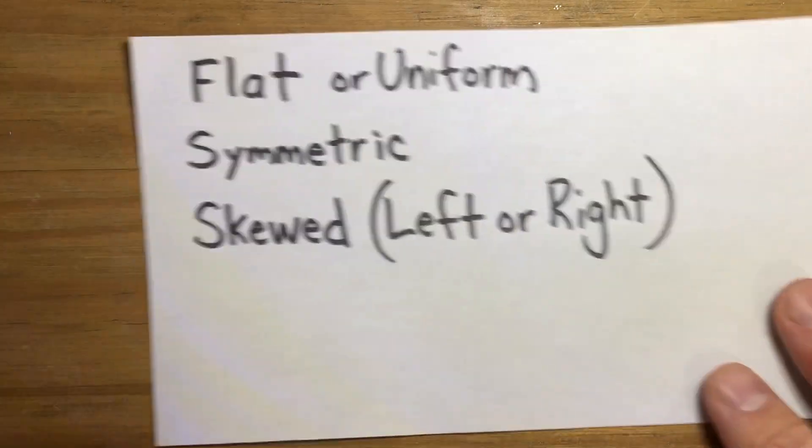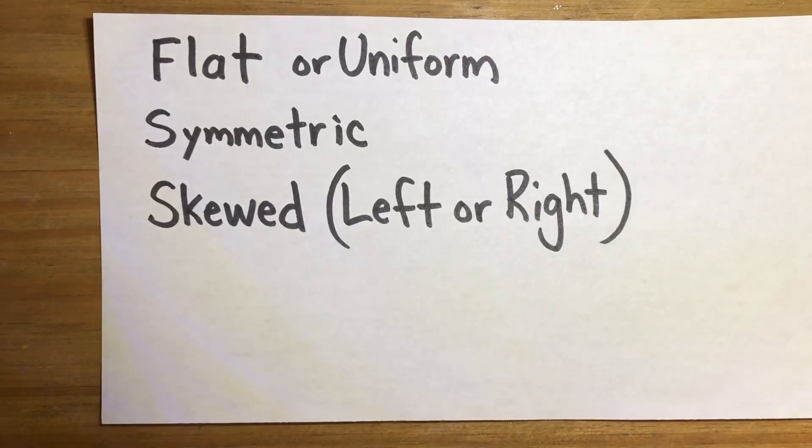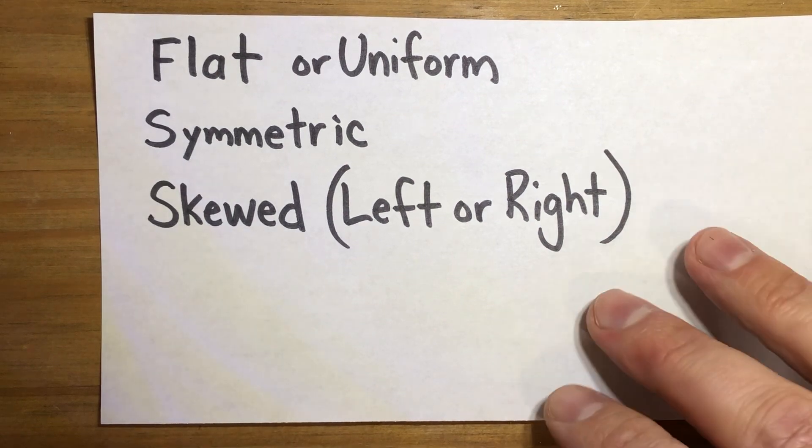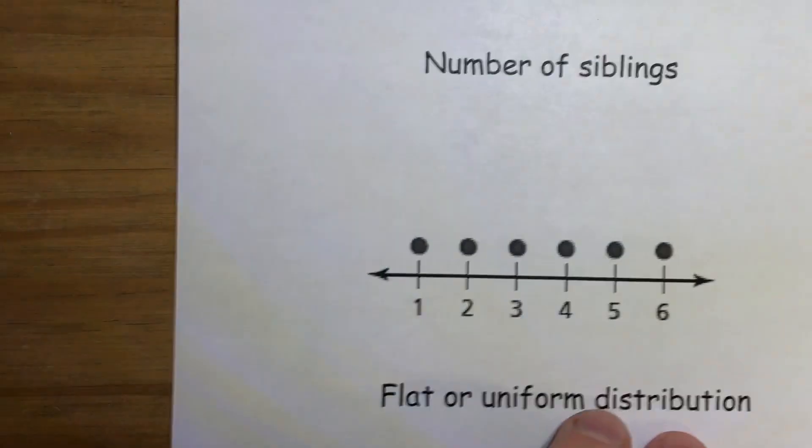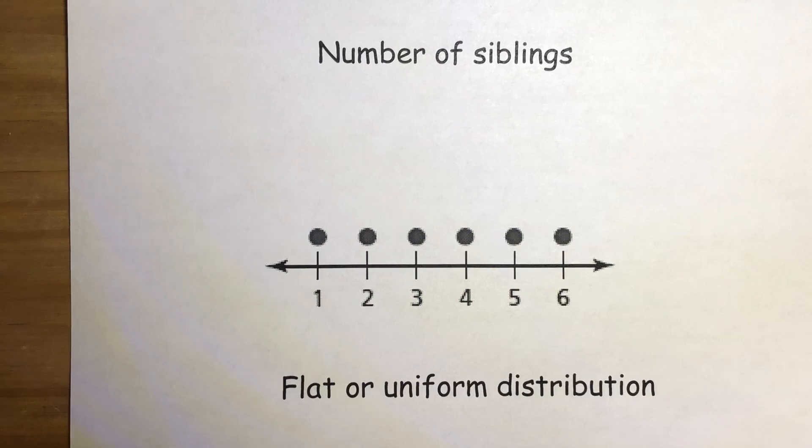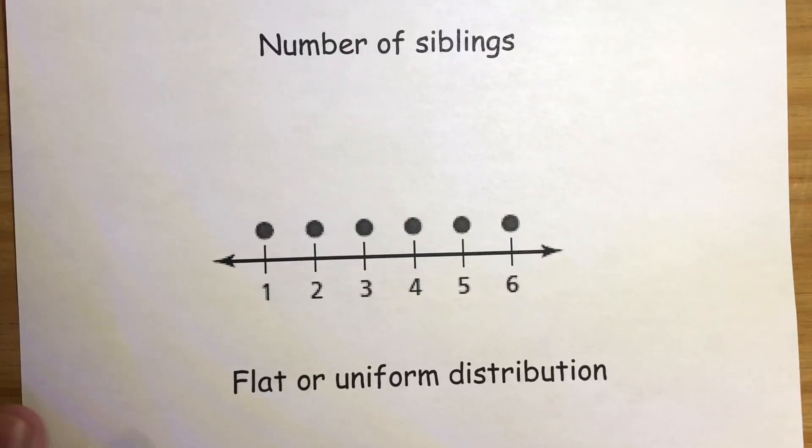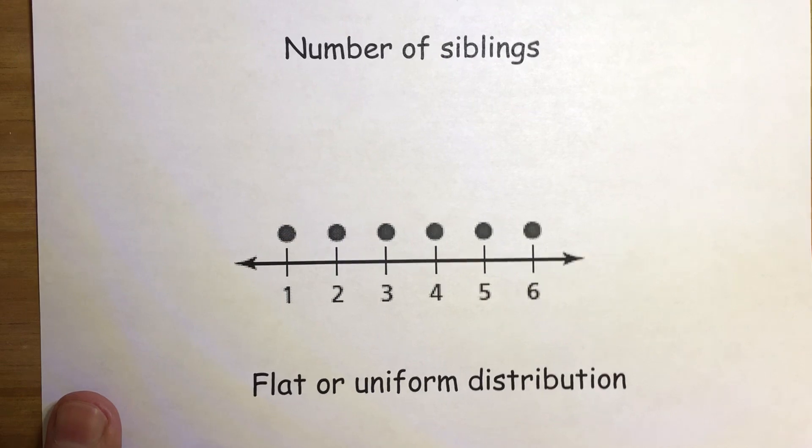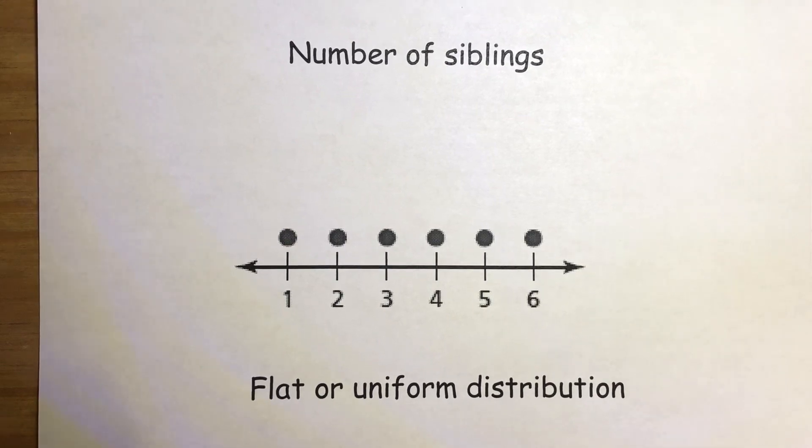So these are the terms we're going to be talking about today. Flat or uniform data, symmetric data, and skewed data. Now I think flat, you should pretty much understand. So when I look at this data, this data is called flat data or uniform data, because everything's the same. Think about a team, they all wear uniforms so that they all look the same. Uniform data or flat data is data where there isn't variation.